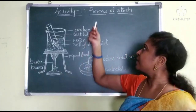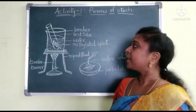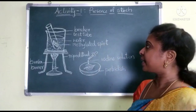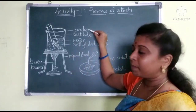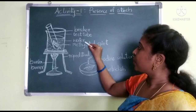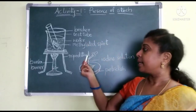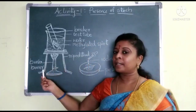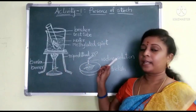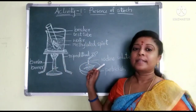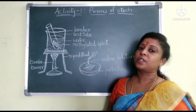This activity is about the presence of starch. What are the apparatus used to perform this activity? Beaker, test tube, water, methylated spirit, tripod stand, Bunsen burner, Petri dish, and iodine solution. These are the apparatus used to perform this activity.